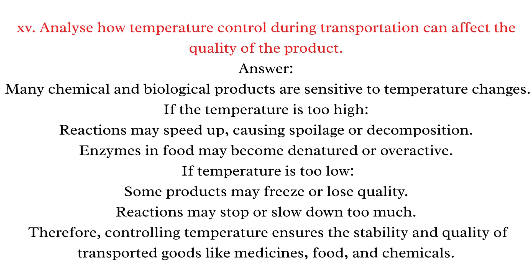Q15: Analyze how temperature control during transportation can affect the quality of the product. Answer: Many chemical and biological products are sensitive to temperature. If temperature is too high, reactions may speed up, causing spoilage or decomposition, and enzymes may become denatured or overactive. If too low, products may freeze or lose quality. Controlling temperature ensures the stability of transported goods like medicines, food, and chemicals.